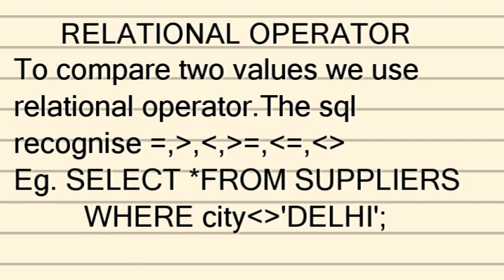The first thing is the relational operator. A relational operator is based upon signs already available on your keyboard. Basically these are: equal to, less than, greater than, greater than or equals to, less than or equals to, and not equals to. When representing not equals to in SQL, we use two angular brackets — less than and greater than together.